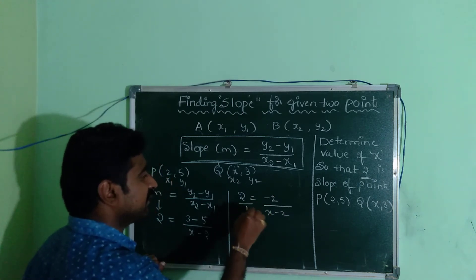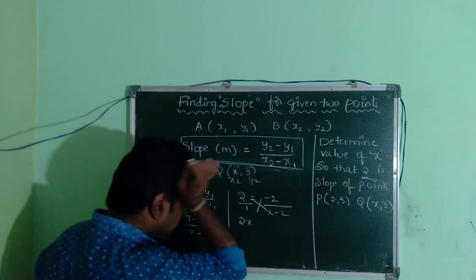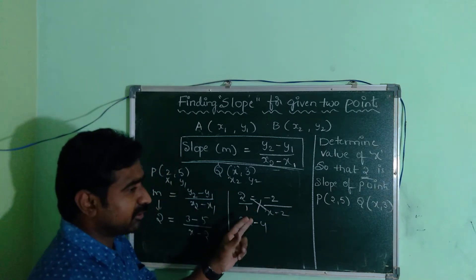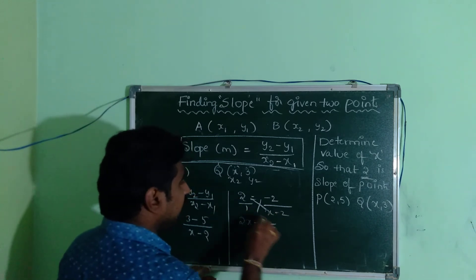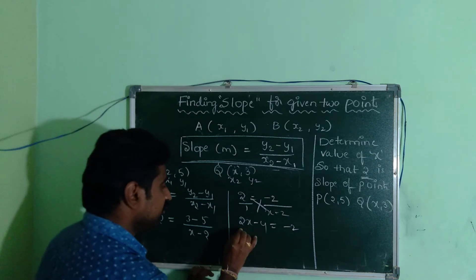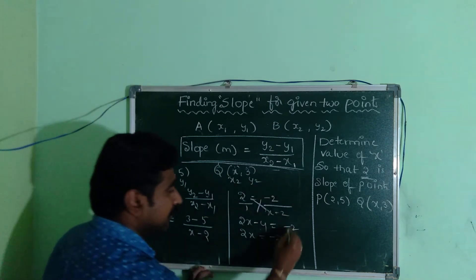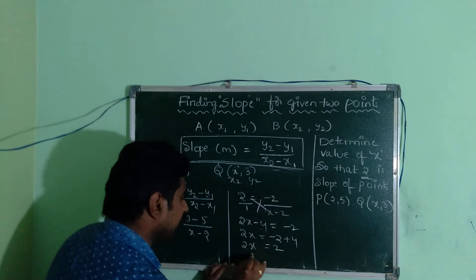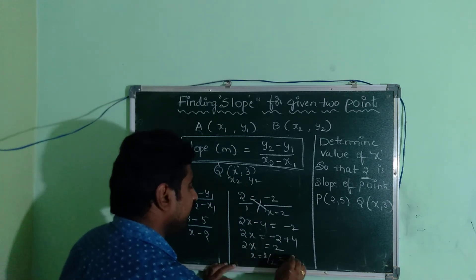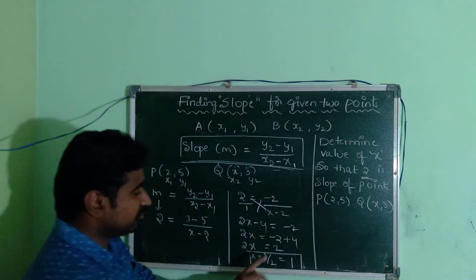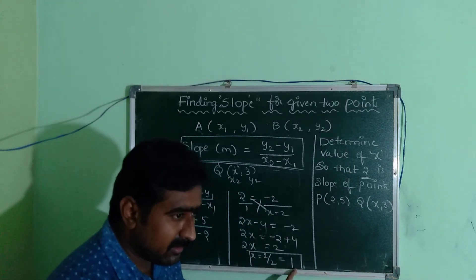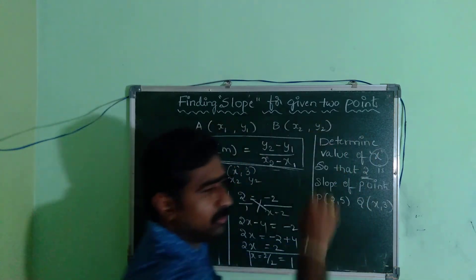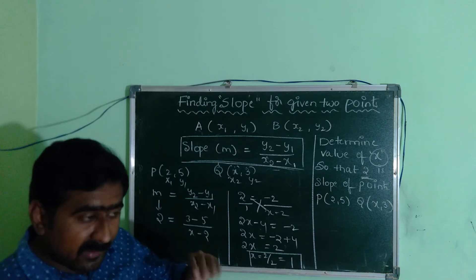Cross multiplying: 2 into x minus 2 equals minus 2. So 2x minus 4 equals minus 2. Bringing minus 4 to the other side, 2x equals minus 2 plus 4, which gives 2x equals 2. Therefore x equals 2 by 2, which equals 1. So the value of x is 1 when the slope given is 2. This is the method used to solve when the slope is given.